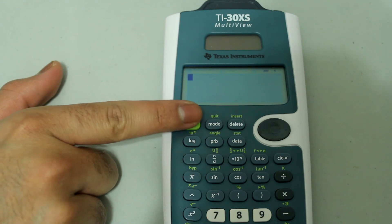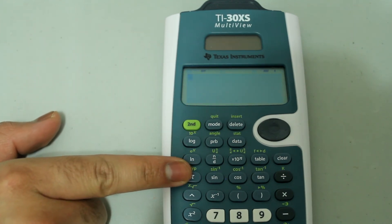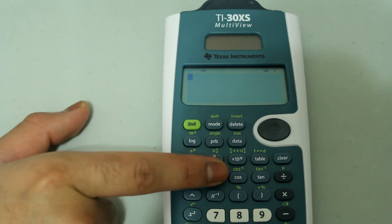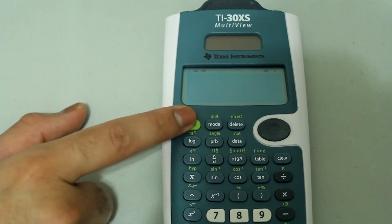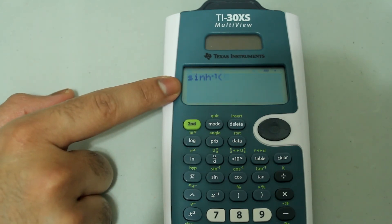I'll press 2nd, the PI button, and press 2nd and then sine to choose inverse sine, which gives you inverse sinh.